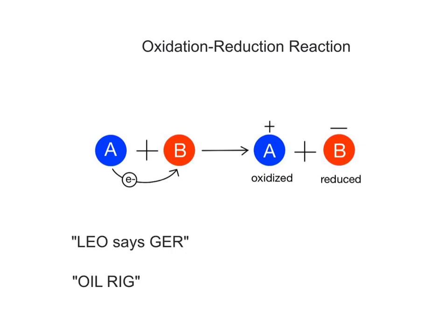There are two mnemonics that can help you remember the terms oxidation and reduction. The phrases are 'Leo says GER' and 'OIL RIG.' Leo says GER stands for: loss of electrons is oxidation, and gain of electrons is reduction. OIL RIG stands for: oxidation is loss, and reduction is gain of electrons.